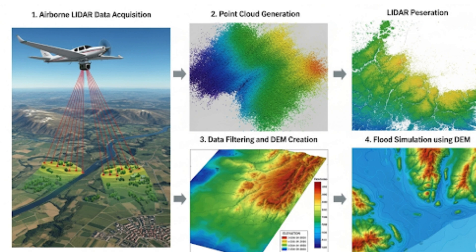A DEM represents the Earth's terrain and is created from LiDAR ground returns. A DEM can be used as a 3D elevation source layer and as input to multiple analysis workflows, such as flood modeling, line-of-sight analysis, and terrain analysis.